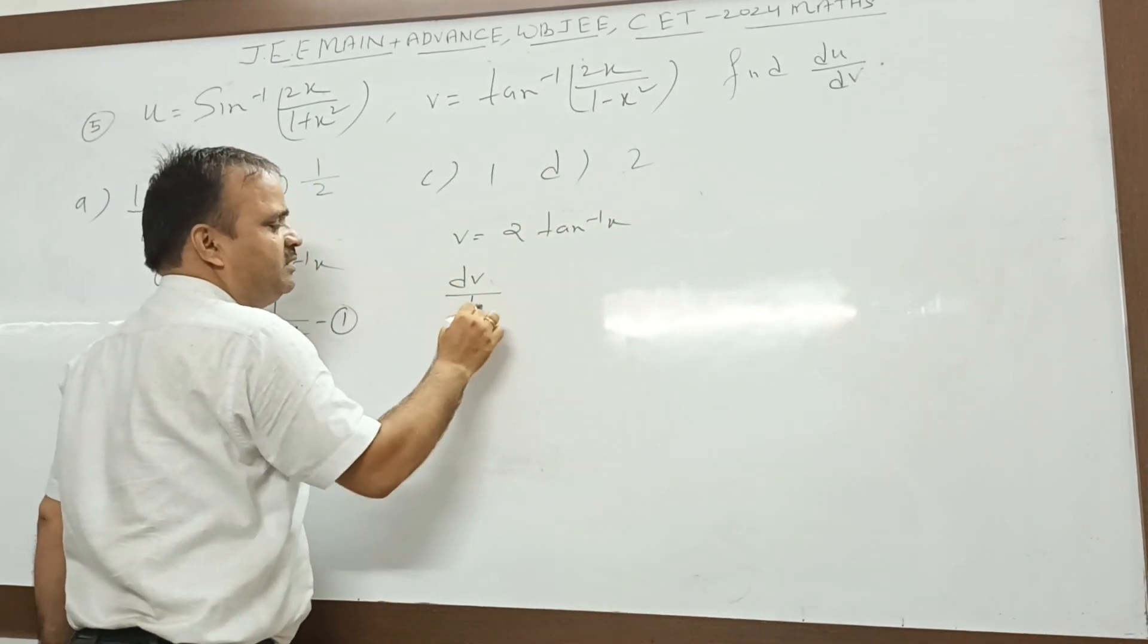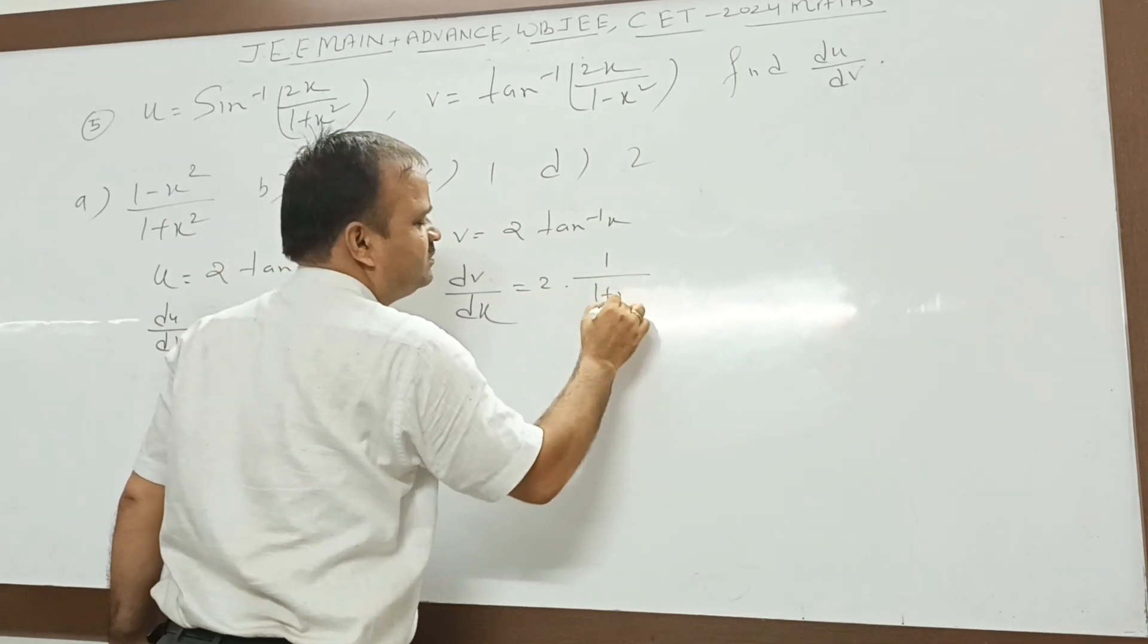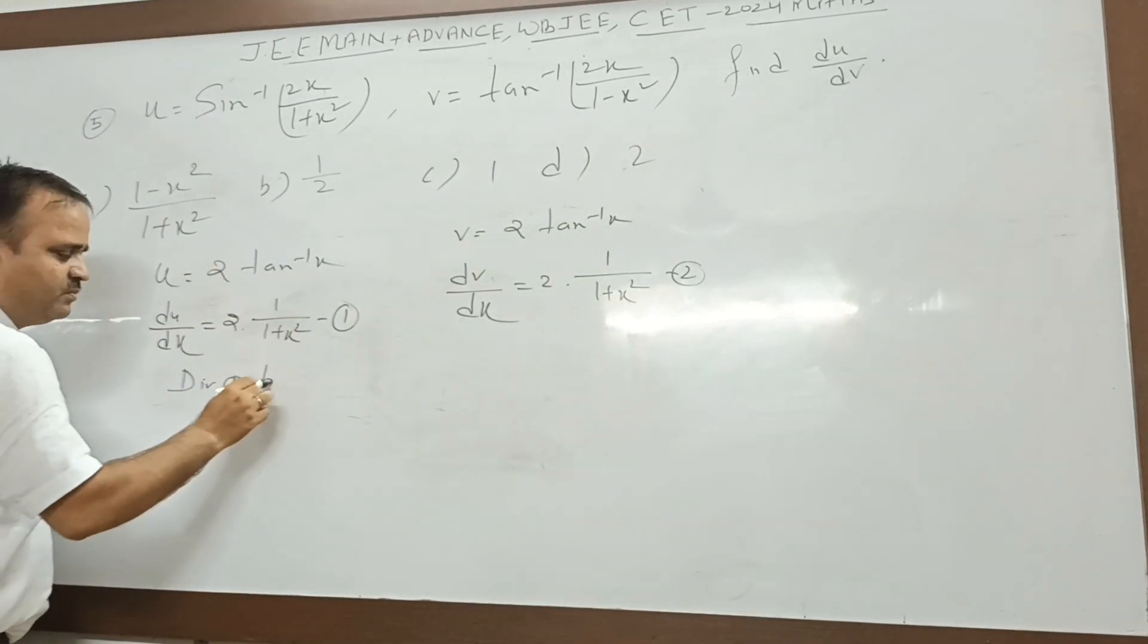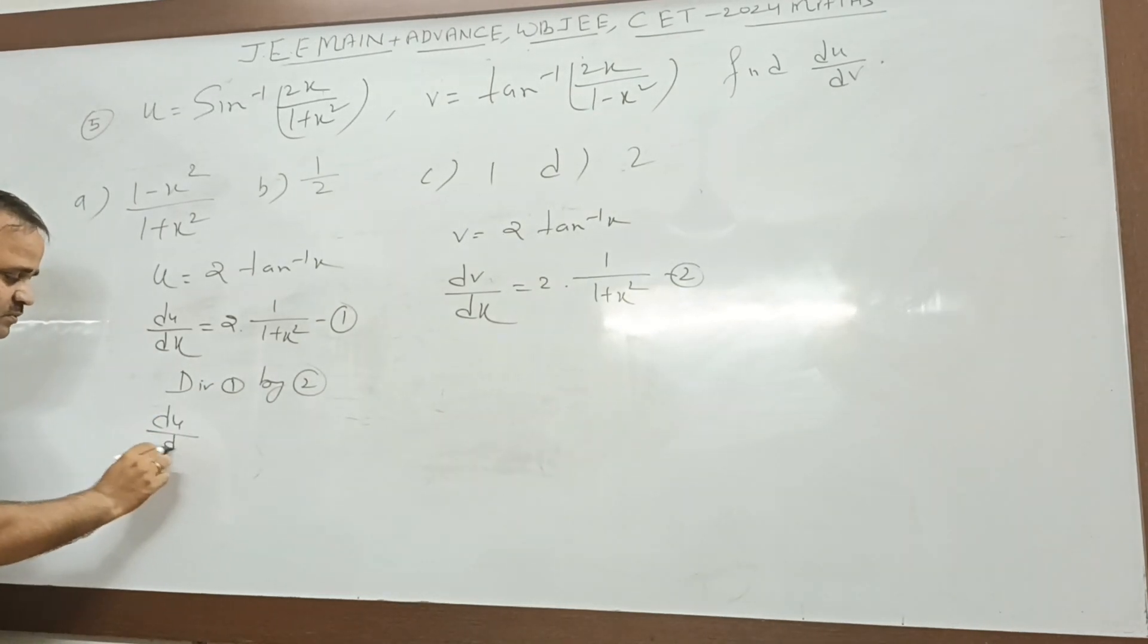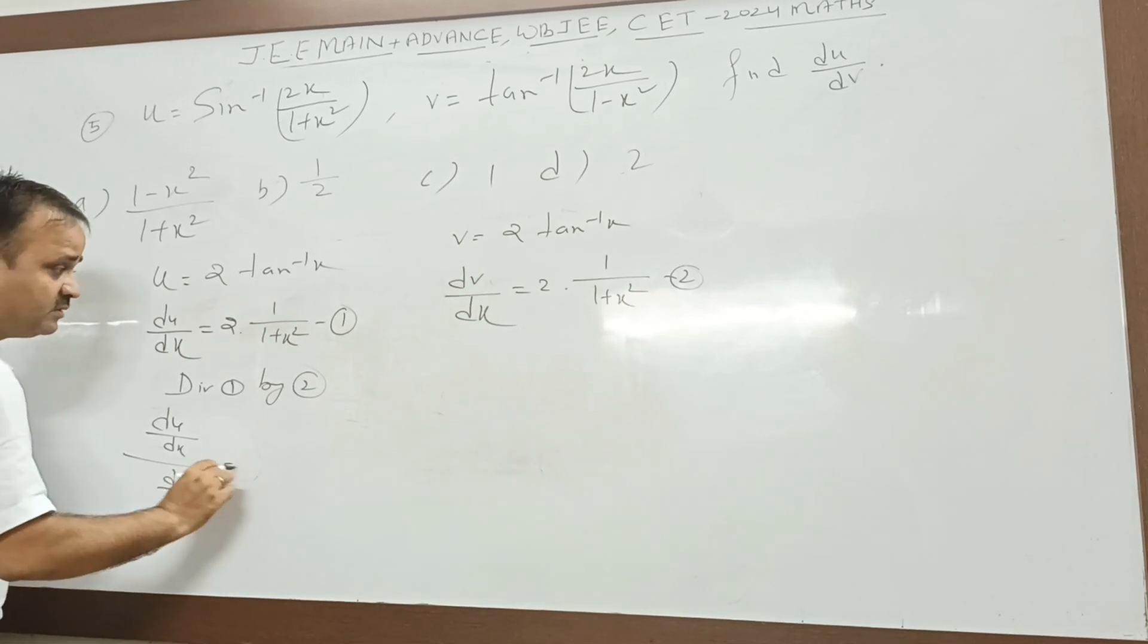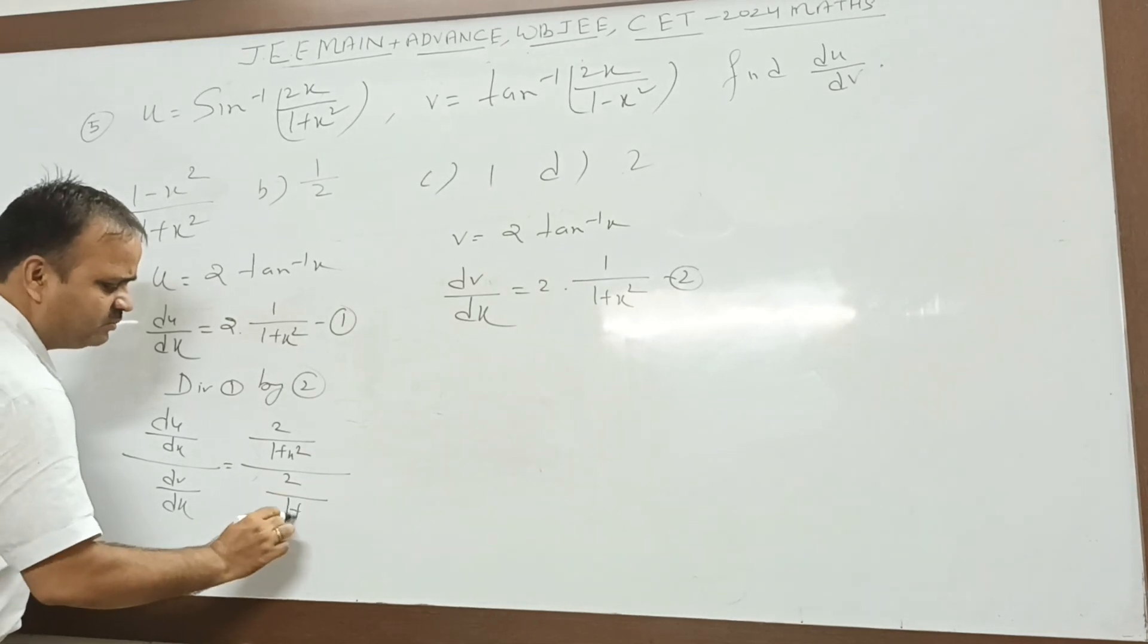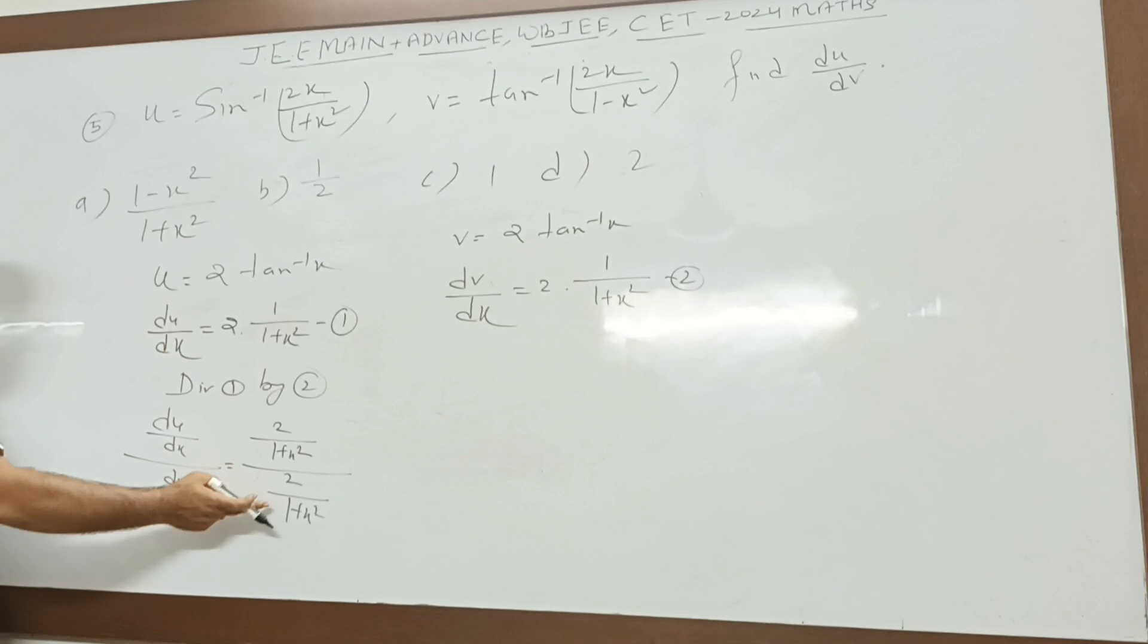What is dv by dx? This is 2. What is it? Dividing 1 by 2. What is it? 2 by 1 plus x square.